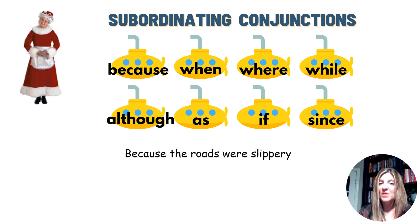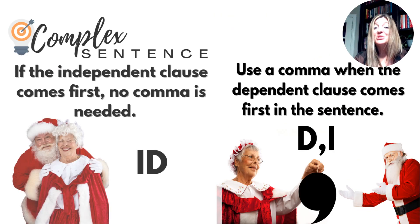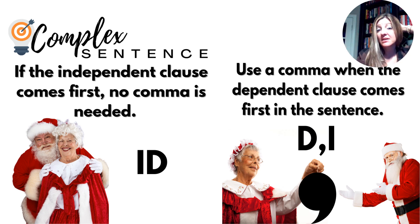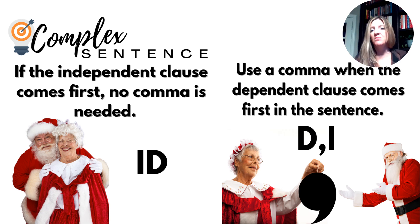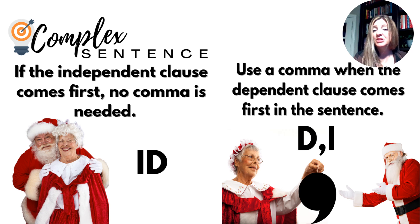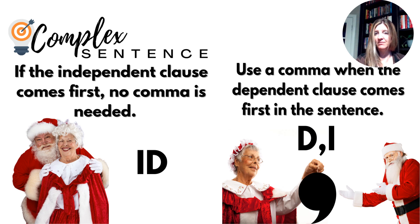There are two ways to punctuate or combine an independent and dependent clause. The first: if you have an independent clause that comes first in your sentence, you're good to go — no comma is needed. But if the dependent clause comes first, then you need a comma. So 'when I win the lottery, comma, I'm going to give the money to my favorite teacher, Mrs. Luna. Period.'